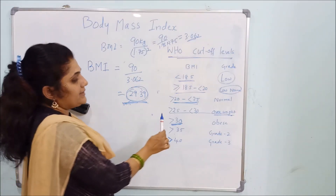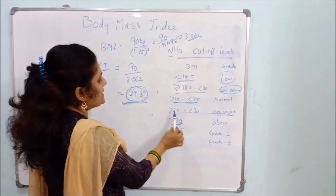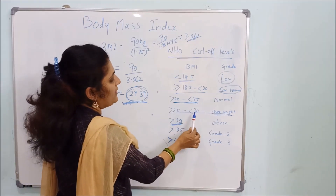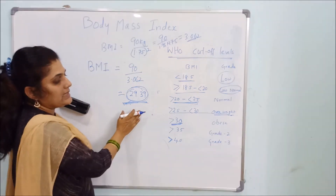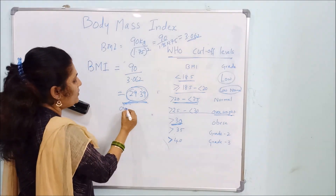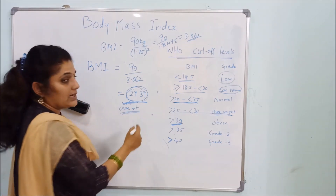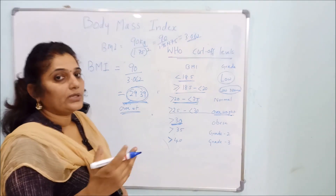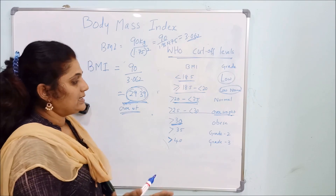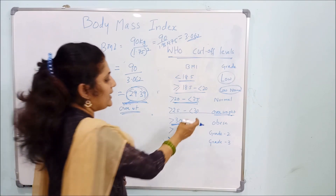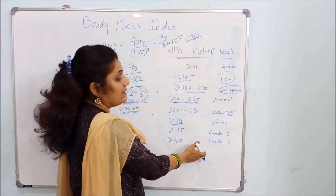The BMI of this person is 29.39. It falls between 25 and 30, so this person is considered overweight. That's how you calculate your BMI.